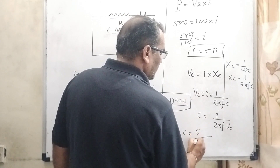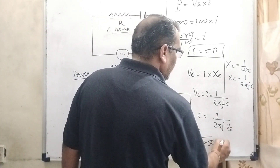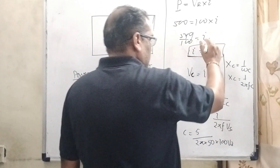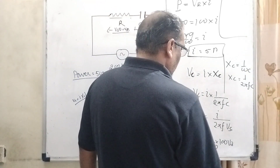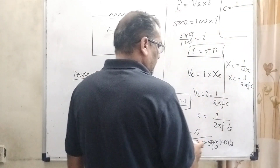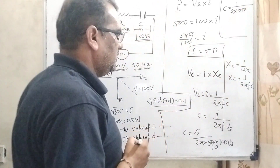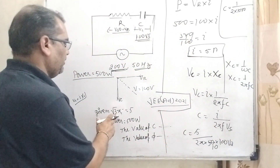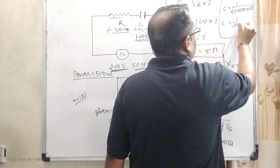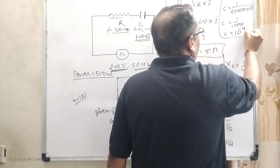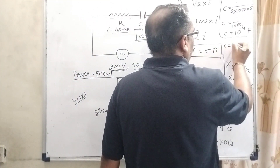Here I is 5 ampere, frequency is 50 hertz, and V_C is 100√3. Solving: C equals 5 divided by (2π × 50 × 100√3). Simplifying, the denominator becomes 1000π√3. Since π√3 is given as 5, the denominator becomes 5000, giving C equals 1/10,000, which is 10⁻⁴ farad. Converting to microfarads, C equals 100 microfarad.